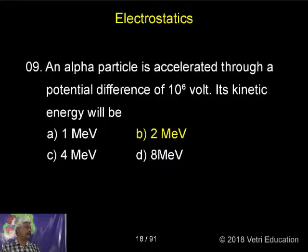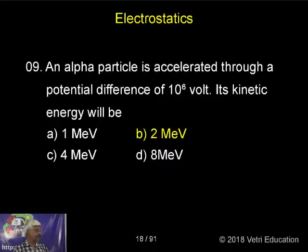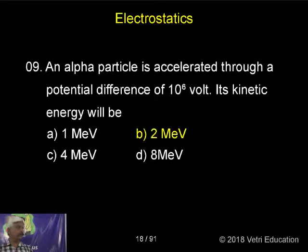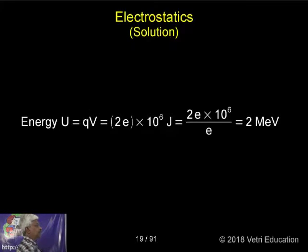An alpha particle is accelerated through a potential difference of 10 power 6 volt. Its kinetic energy will be calculated as follows: the alpha particle is accelerated through a potential difference V, and the energy is given by Q into V.